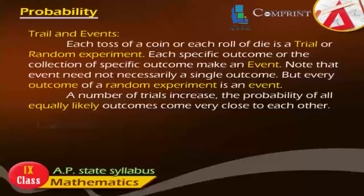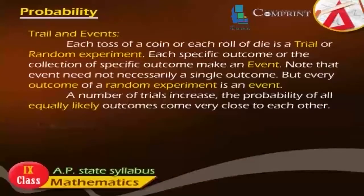Trial and Events: Each toss of a coin or each roll of a die is a trial or random experiment. Each specific outcome or the collection of specific outcomes makes an event. Note that an event need not necessarily be a single outcome, but every outcome of a random experiment is an event. As the number of trials increases, the probability of all equally likely outcomes comes very close to each other.